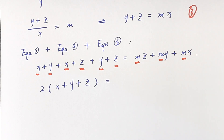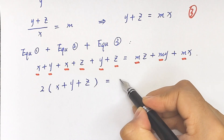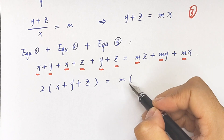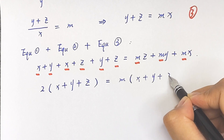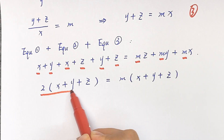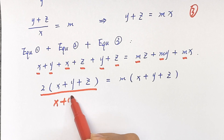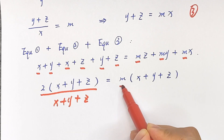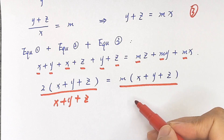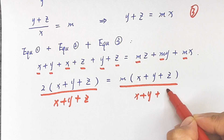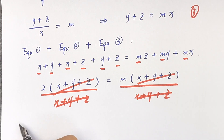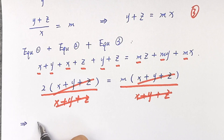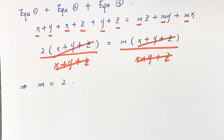On the right side, m is common, so we factor it out: m times (x plus y plus z). We then divide both sides by (x plus y plus z) — this cancels on both sides — and the answer is m equals 2.